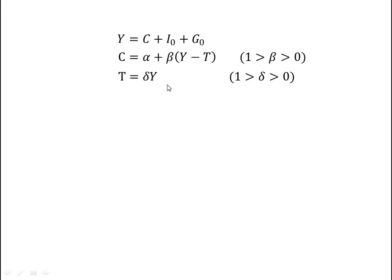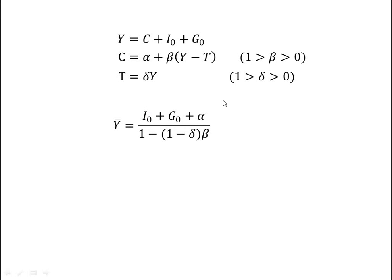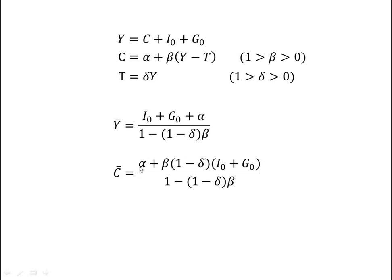After solving this national income model, the equilibrium values are: equilibrium national income y̅ equals (i0 plus z0 plus alpha) divided by (1 minus (1 minus delta) times beta); equilibrium consumption c̅ equals [alpha plus beta times (1 minus delta) times (i0 plus z0)] divided by [1 minus (1 minus delta) times beta]; and equilibrium taxes t̅ equals delta times (i0 plus z0 plus alpha) divided by (1 minus (1 minus delta) times beta).